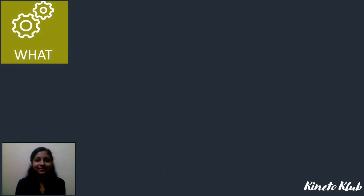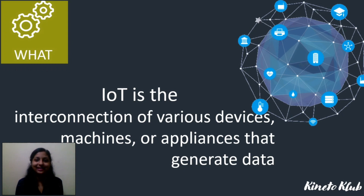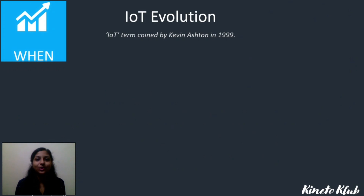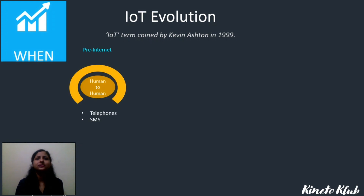The next W is what. It is basically the interconnection of various devices, machines, and appliances to generate data. The next W is when — when did it all start? The term IoT was coined by Kevin Ashton in 1999.